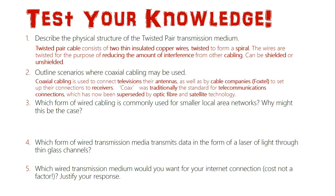Question two: outline scenarios where coaxial cabling may be used. Coaxial cabling, or coax, is used to connect televisions to their antennas, as well as by cable companies such as Foxtel to set up connections to their receivers, which are usually mounted on your roof as a small dish. Traditionally, coax was the standard for telecommunication connections such as phone lines, but now this has been superseded. Here in Australia, the NBN is replacing those coaxial lines with optic fiber, which has a greater capacity for bandwidth and speed and is a far superior option for data transmission.